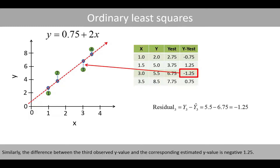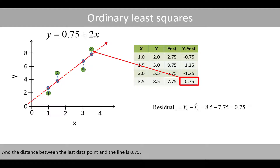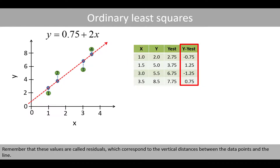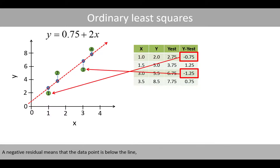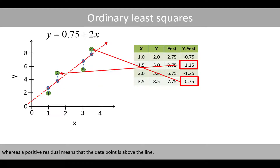This results in a value of 1.25. Similarly, the difference between the third observed y value and the corresponding estimated y value is negative 1.25. And the distance between the last data point and the line is 0.75. Remember that these values are called residuals, which correspond to the vertical distances between the data points and the line. A negative residual means that the data point is below the line, whereas a positive residual means that the data point is above the line.